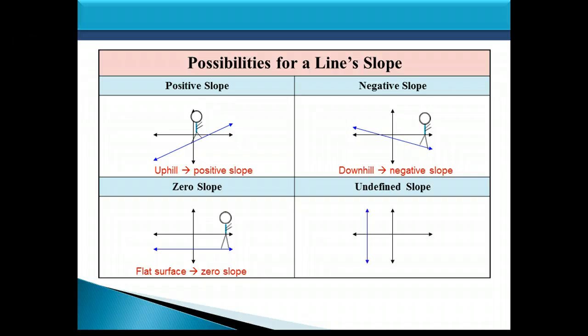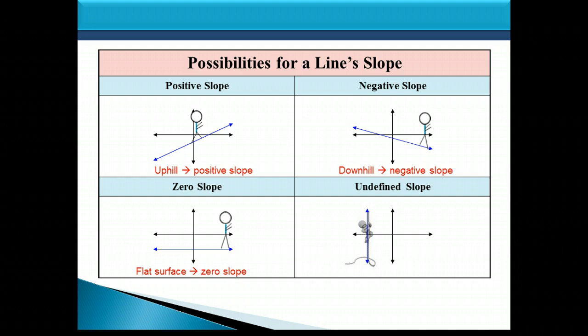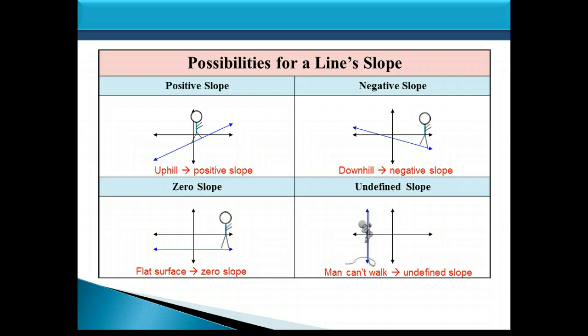A line that has undefined slope is a line that goes straight up and down — a vertical line. It's difficult to apply the same analogy because there is no left end of the line. So I like to imagine the man hanging on to this line for dear life, like it's a rope, because he can't walk on it. If you imagine the man unable to walk because the line goes straight up and down, that's a line with undefined slope.